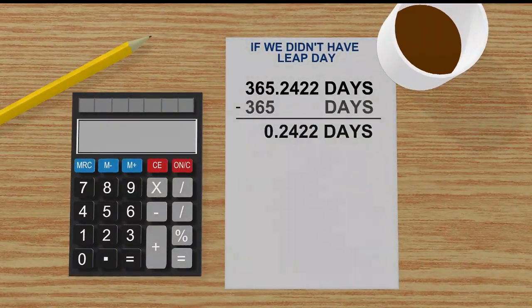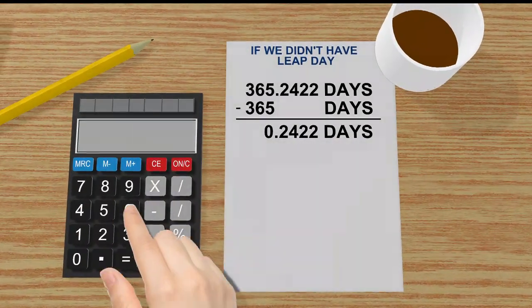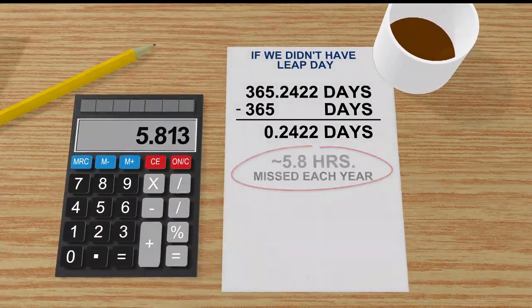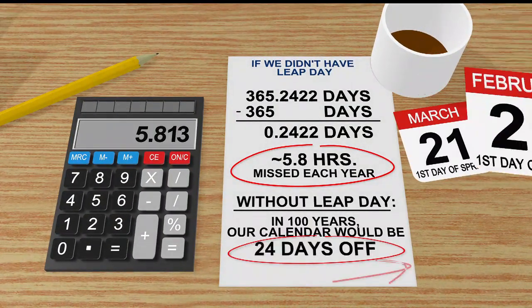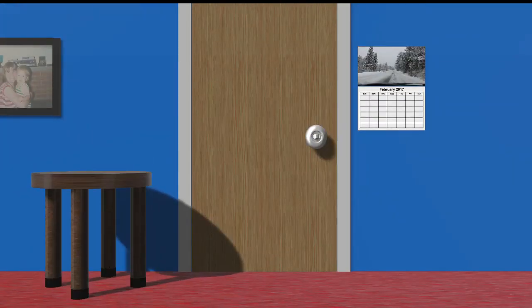If we do the math, if we didn't have a Leap Day, it would be about 5.8 hours missed each year. And if you add that up, in a hundred years our calendar would be off by 24 days. That means the first day of spring would no longer be March 21st — it'd be February 25th, which we all know is definitely not the case.